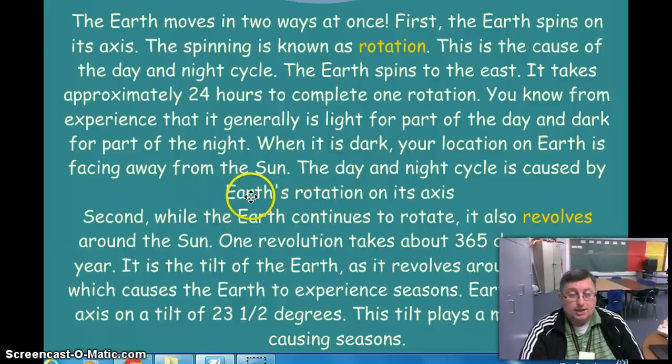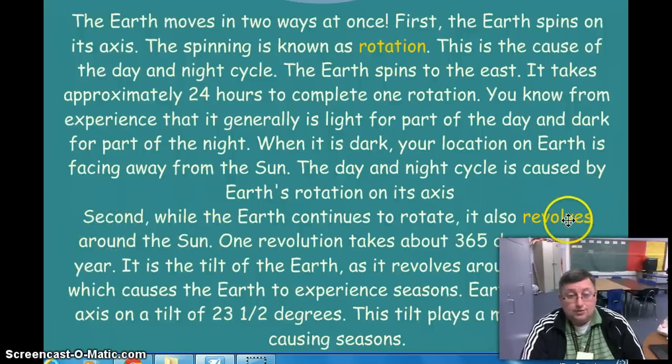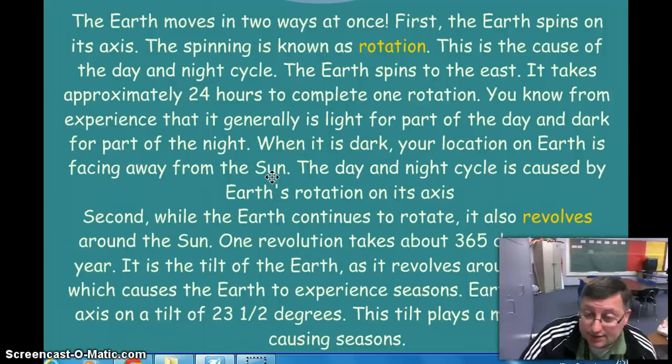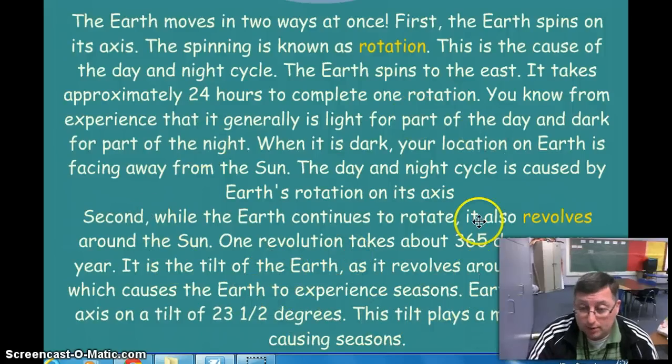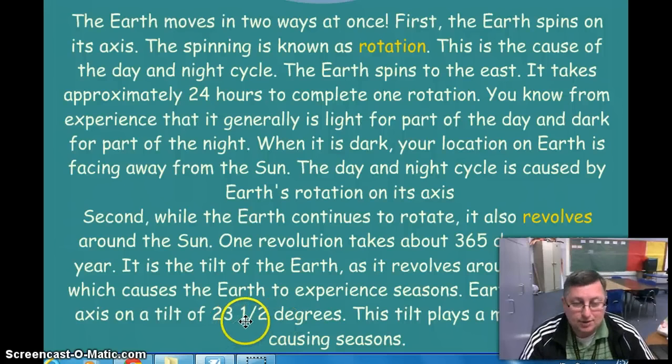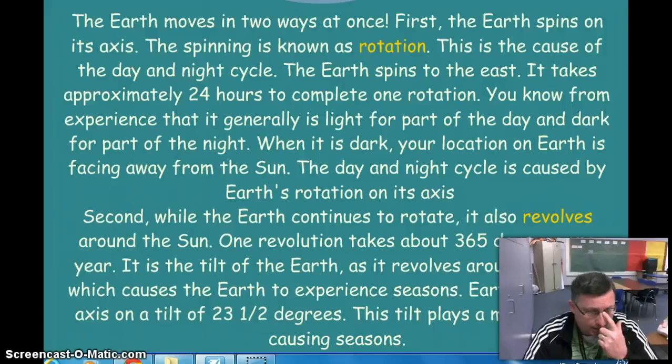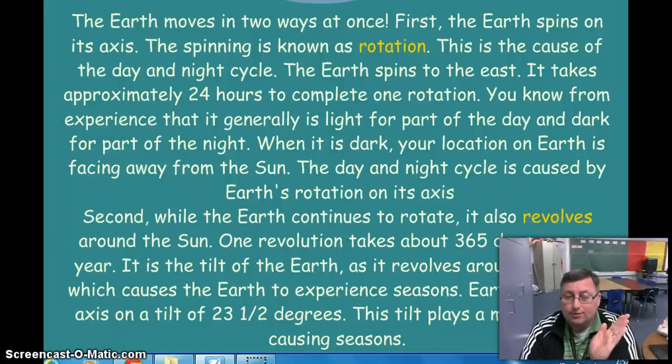Now while it's rotating, while it's spinning, while it's rotating and giving us our days and nights, it revolves around the sun. It moves around and that gives us our 365 days for a year. It takes about 365 days to make one trip all the way around the sun. Now during that time, since our Earth is tilted at a 23 and a half degree angle, that tilt causes our seasons. It's not that we get closer or farther from the sun. It's just a matter of how our Earth is tilted towards the sun or tilted away from the sun.